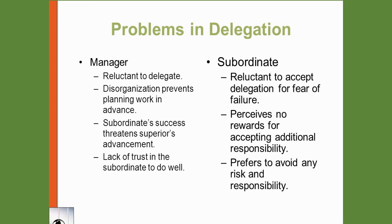From the organization's perspective, weakness in the organization structure can hamper the process of delegation. Some of these weaknesses include lack of unity of command, inadequate planning due to no proper planning, absence of effective control techniques, non-availability of competent managers, and lastly an environment of internal distrust.